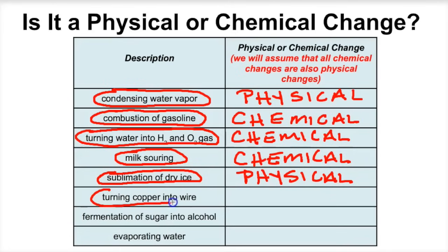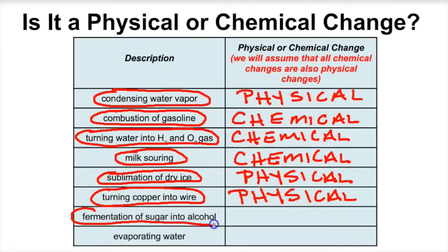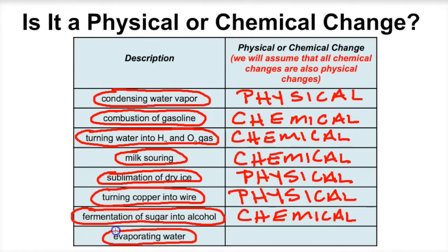The fermentation of sugar into alcohol: we're turning one chemical substance into a different chemical substance, so that's a chemical change. Evaporating water means liquid is turning into a gas — water vapor — which is a change in state of matter, and all changes in state of matter are physical changes.